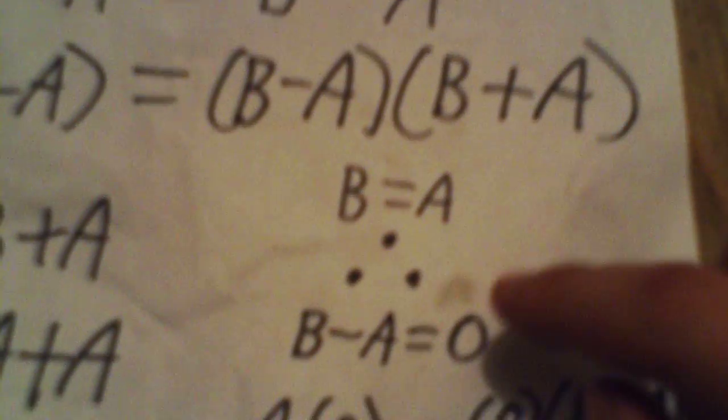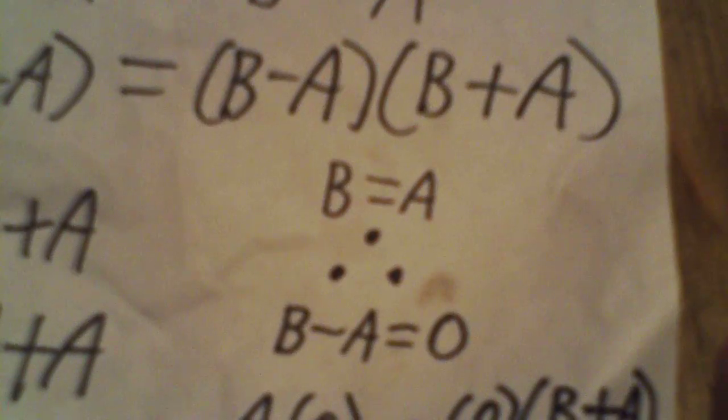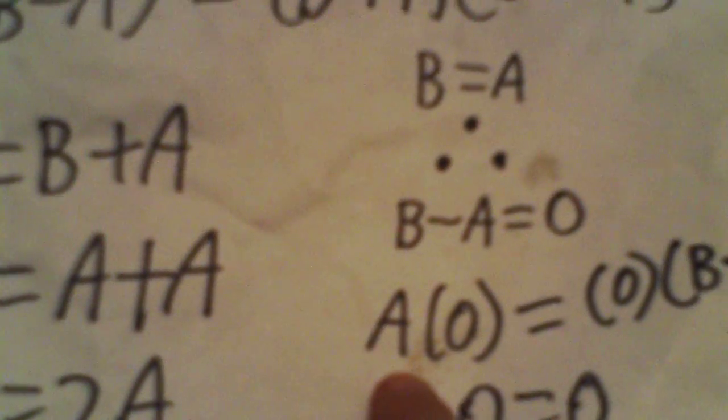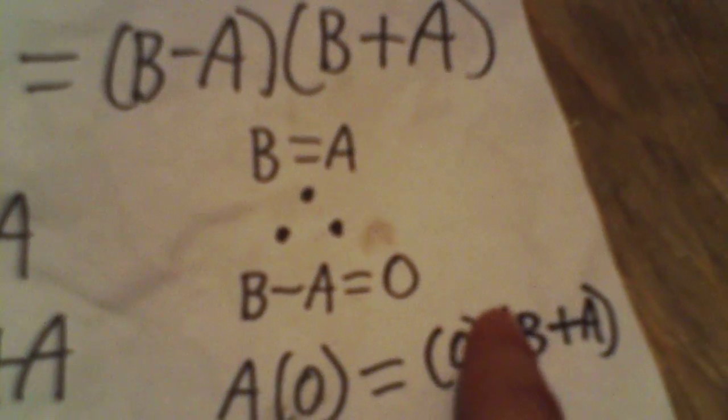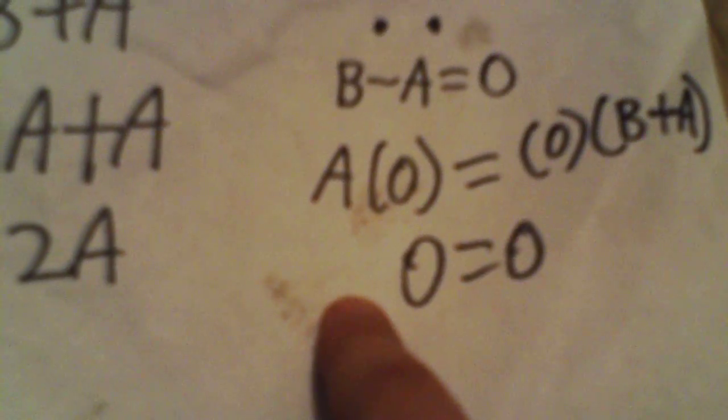the initial condition states A equals B, therefore B minus A equals 0. So you get A times 0 equals 0 times B plus A, or 0 equals 0.